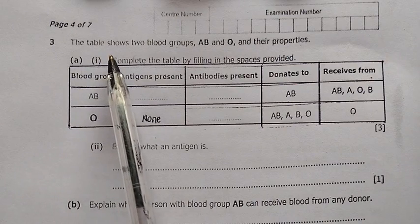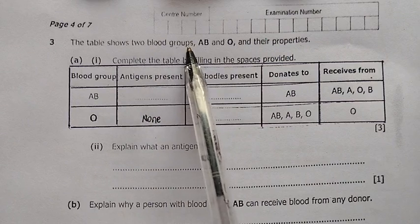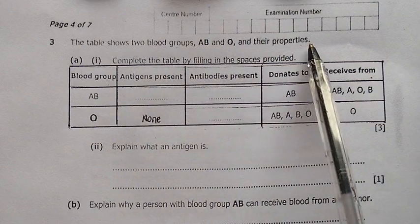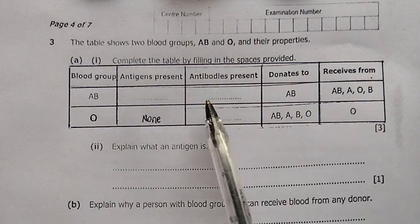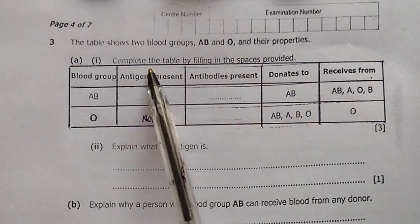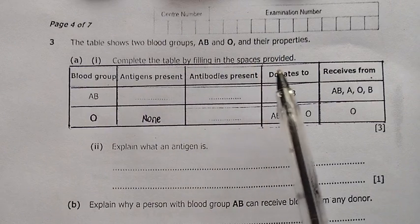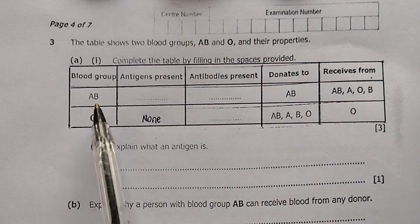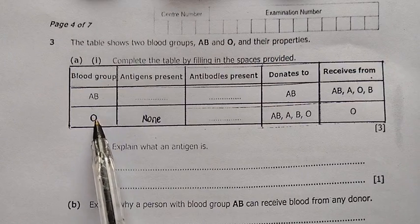The question reads: the table shows two blood groups, blood group A and blood group O, and their properties. So this is the table right here. Question A1: complete the table by filling in the spaces provided. On this table we have blood group A, AB, and blood group O.